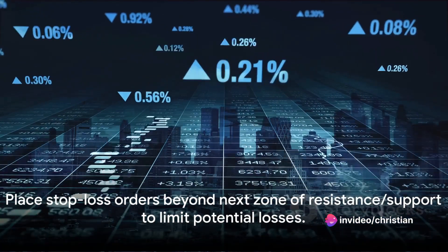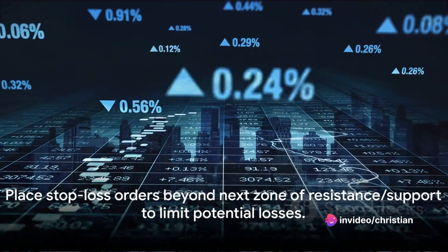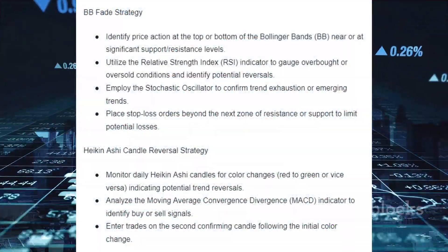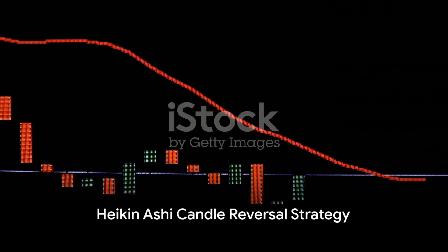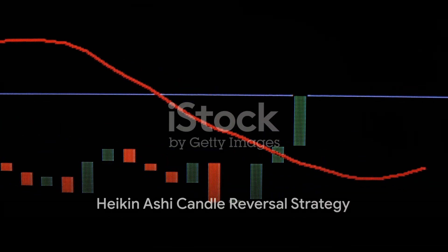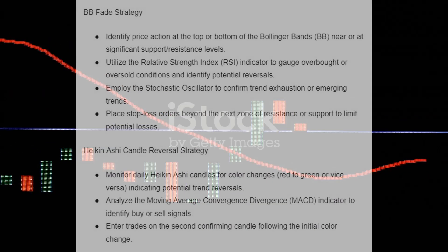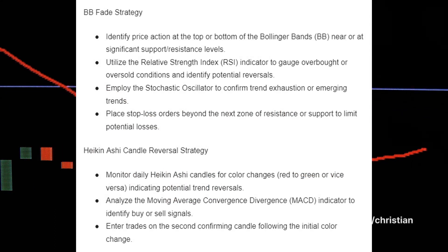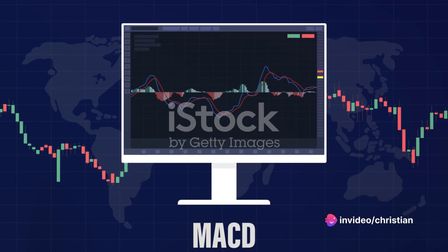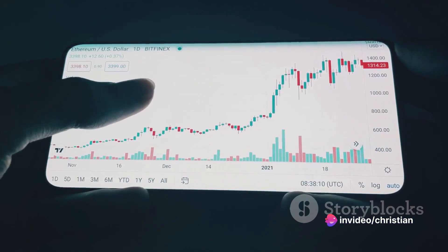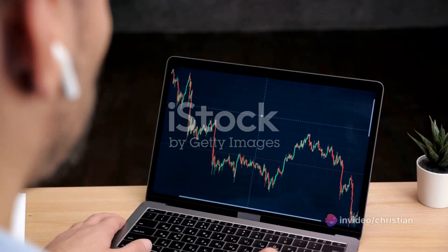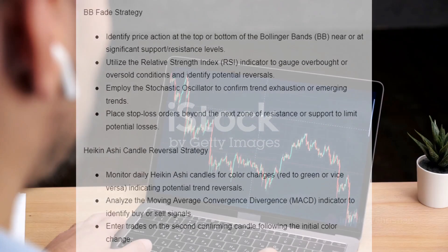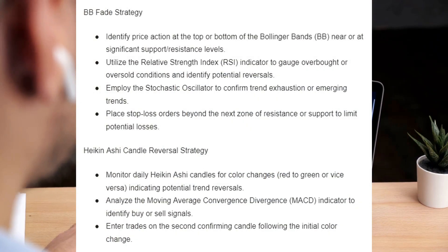Place stop loss orders beyond the next zone of resistance or support to limit potential losses. Monitor daily Heiken-Ashi candles for color changes — red to green or vice versa — indicating potential trend reversals. Analyze the MACD indicator to identify buy or sell signals, and enter trades on the second confirming candle following the initial color change.